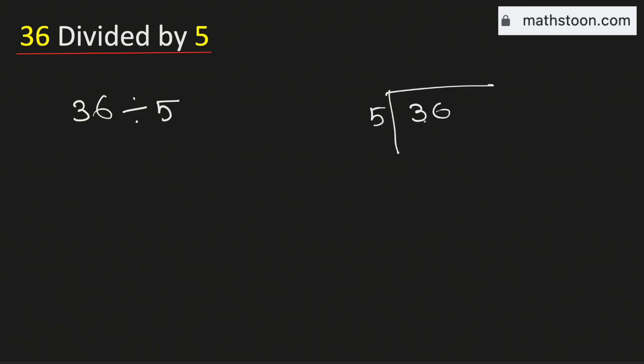5 cannot go into 3, that's why we will consider the whole number 36. 5 times 7 is 35; subtract, we get 1.